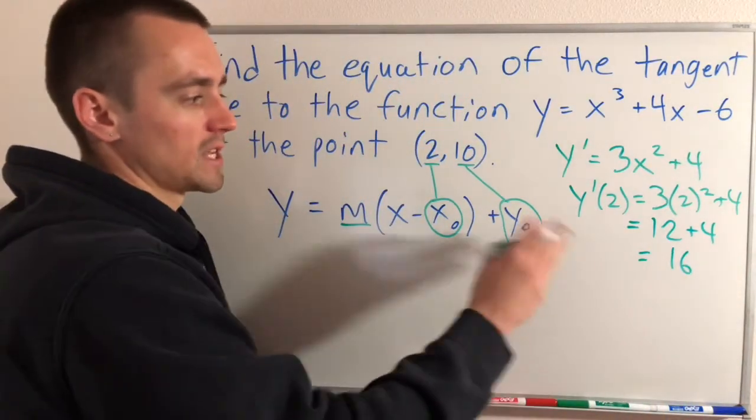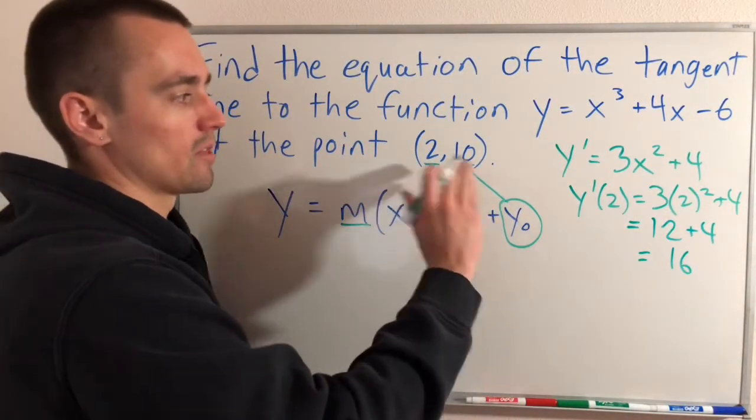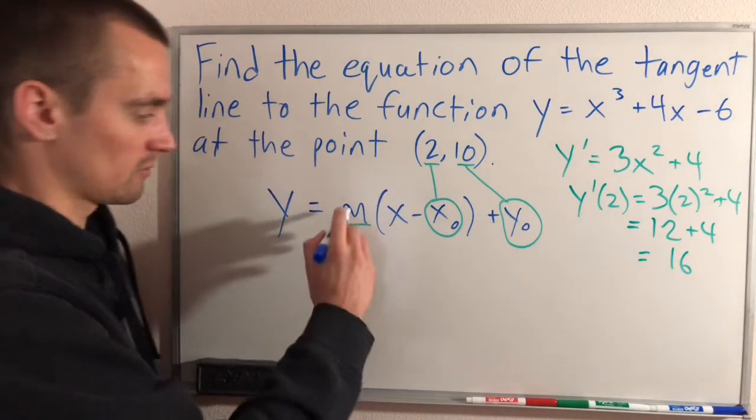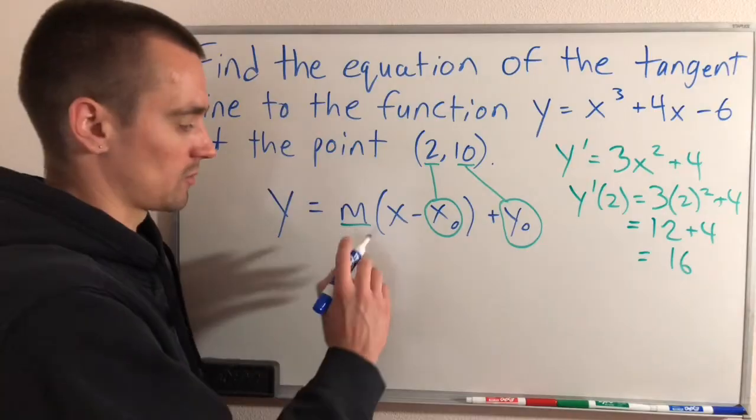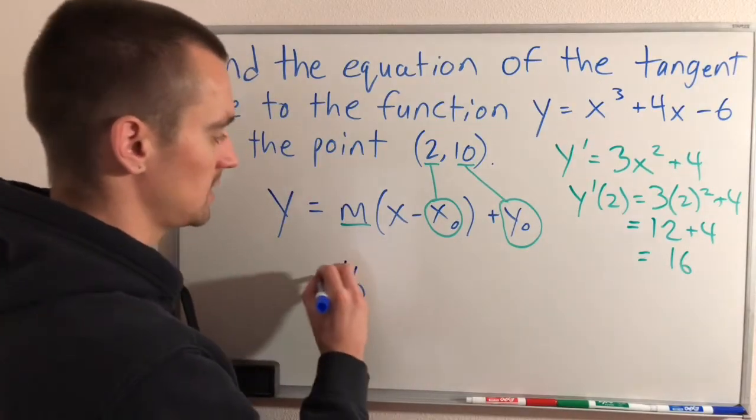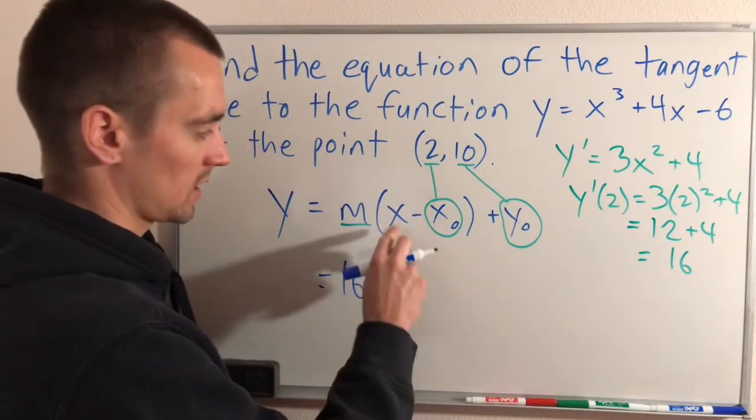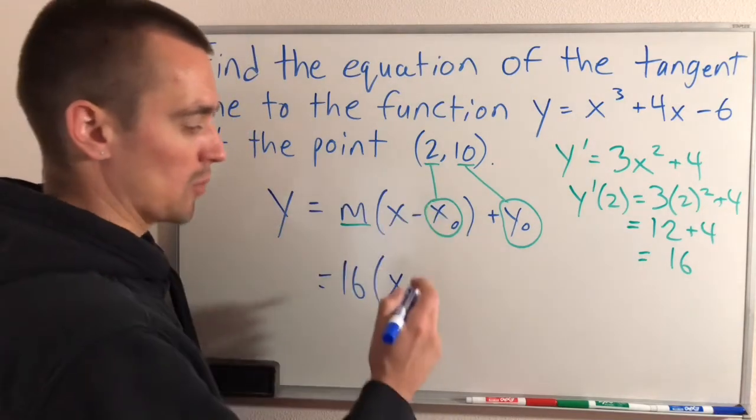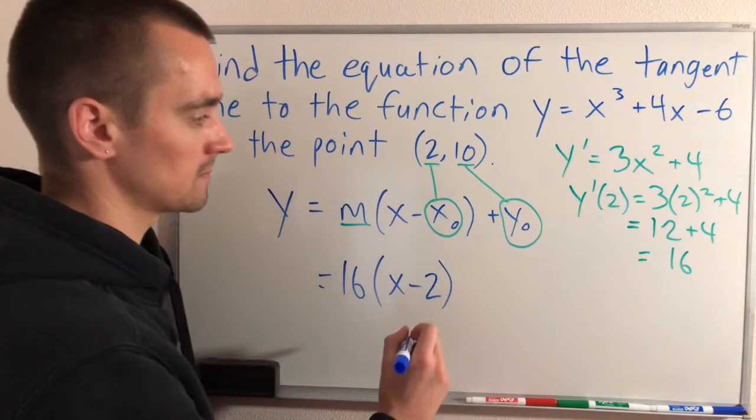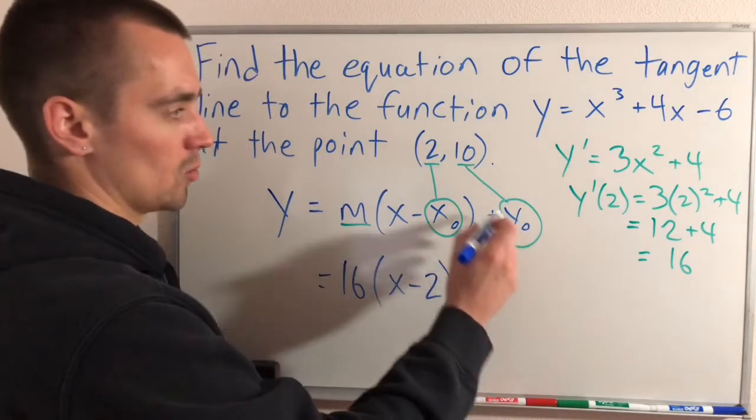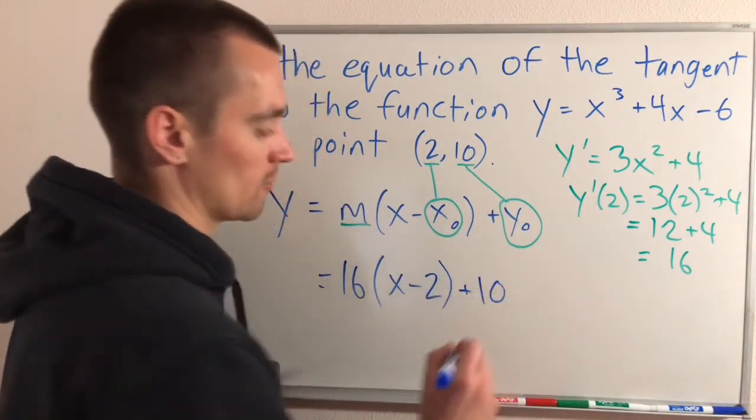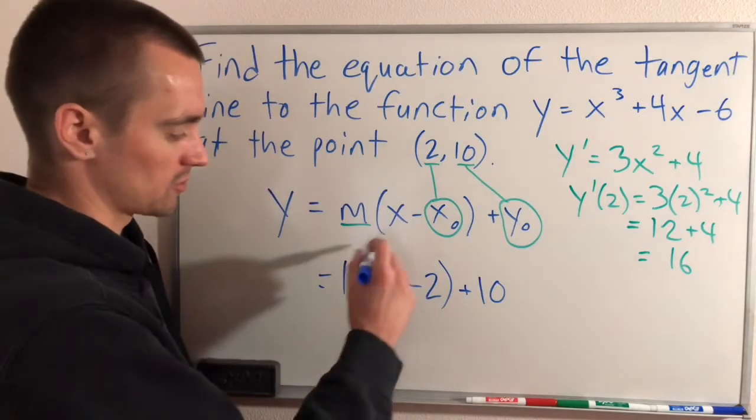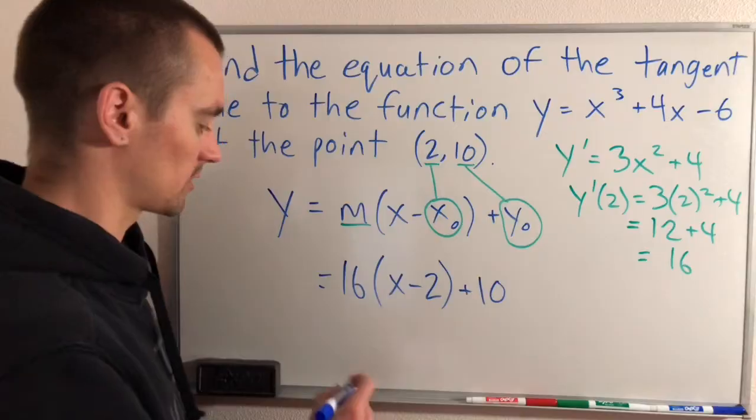The slope of our tangent line at the point (2, 10) is 16. We can replace our m, which represents the slope in a linear function, with 16. Then we have x minus the x-coordinate of the point that lies on this line, plus the y-coordinate of that point. Then we simplify this.